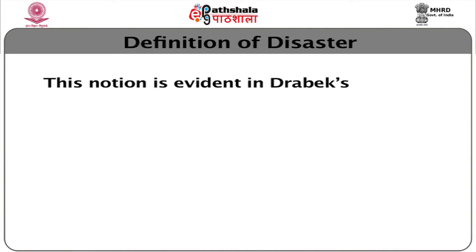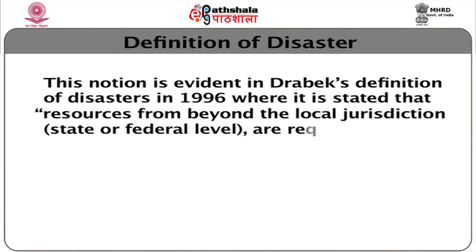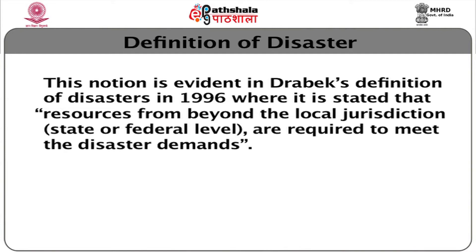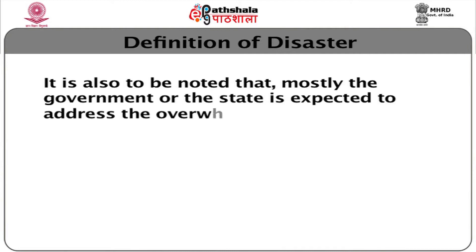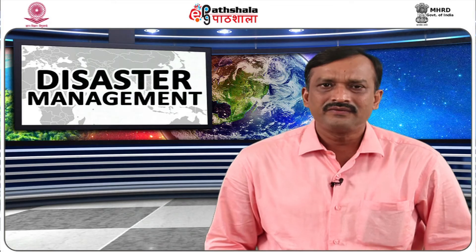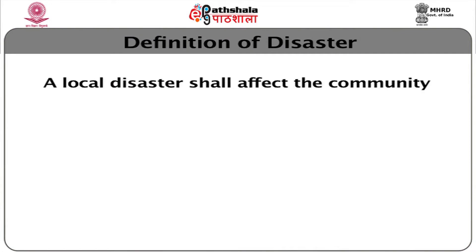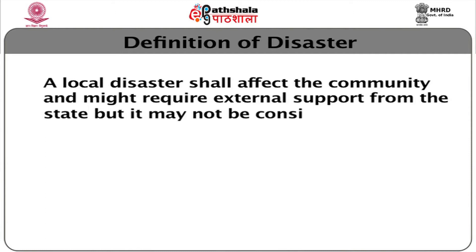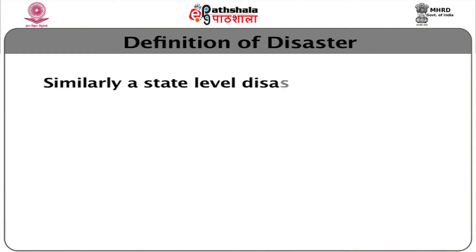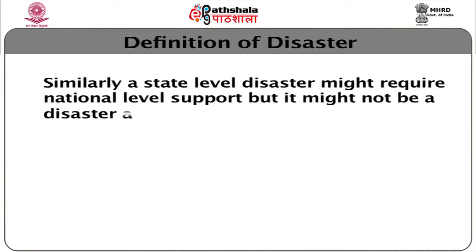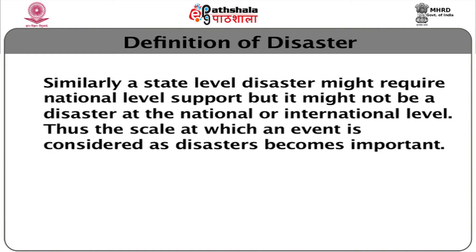This notion is evident in Drabek's definition of disasters in 1996, where it is stated that resources from beyond the local jurisdiction, state or federal level are required to meet the disaster demands. It is also noted that mostly the government or the state is expected to address the overwhelming demands. When we follow the above definitions, the idea of scale becomes significant. A local disaster shall affect the community and might require external support from the state, but it may not be considered a disaster when viewed from the state level. Similarly, a state level disaster might require national level support, but it might not be a disaster at the national or international level. Thus, the scale at which an event is considered a disaster becomes important.